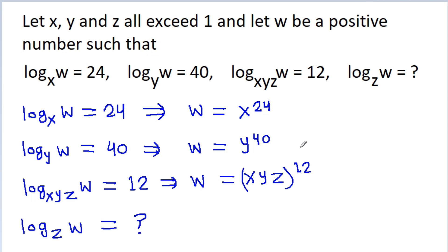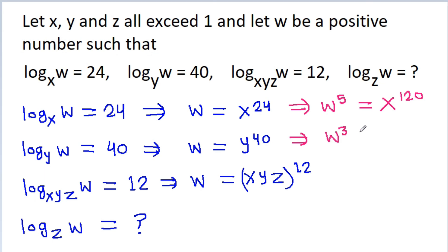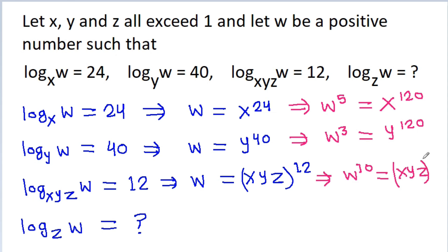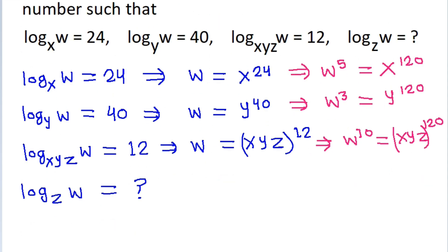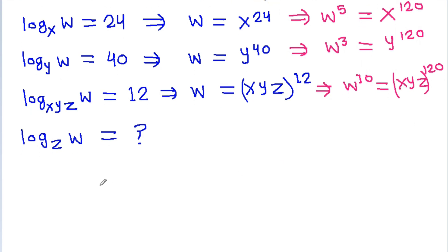The LCM of 24, 40, and 12 is 120. So from here we can get w to the power 5 is equal to x to the power 120 — since 24 times 5 is 120. And from here we can get w cubed is equal to y to the power 120 — since 40 times 3 is 120. And from here we can get w to the power 10 is equal to xyg to the power 120.